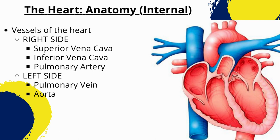The left side of the heart, including the left atrium and left ventricle, pumps oxygenated blood to the rest of the body through the aorta. The left atrium receives oxygenated blood from the lungs via the pulmonary veins and pumps it into the left ventricle, which then contracts and pumps the oxygenated blood into the aorta and to the rest of the body.